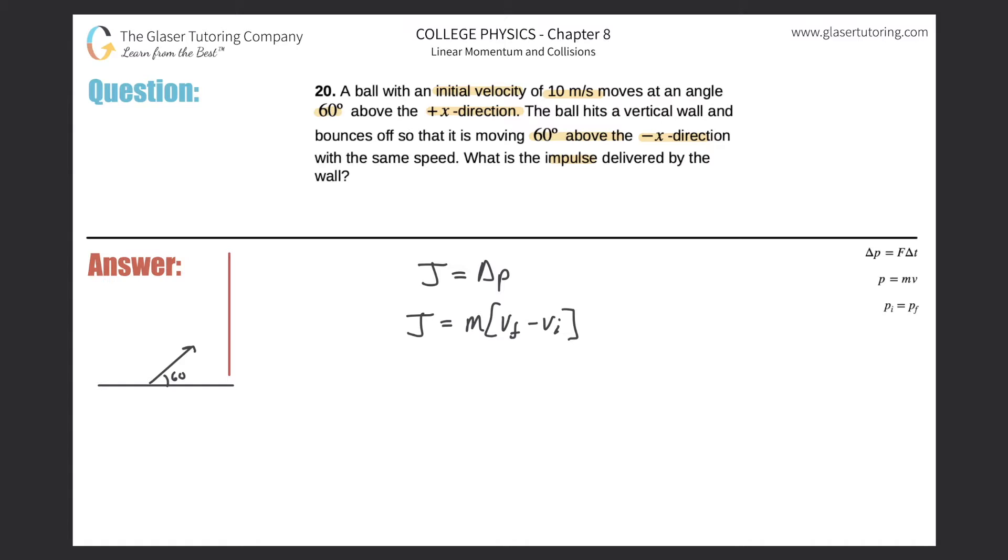It says that the initial velocity of this ball is 10 meters per second, so let's go to the picture. So it's 10 meters per second, and it's traveling at 60 degrees above the positive x direction. That's basically what I have here. So now what's going to happen is it's going to travel and hit the wall.